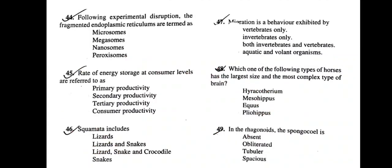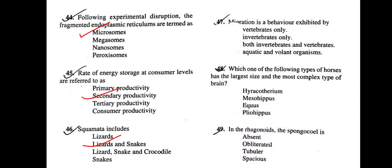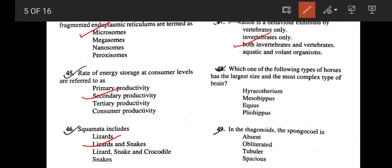Following experimental disruption, the fragmented endoplasmic reticulums are termed microsomes. Very easy one. Next question: Rate of energy storage at consumer level is referred to as secondary productivity. Next: Squamata includes? Under Squamata we can find Lacertilia, Ophidia, and Amphisbaenia. So obviously lizards are included, then lizards and snakes are also included. But lizard, snake and crocodiles - crocodiles are not included. They come under Archosauria. So the best suited answer would be option B, lizards and snakes.